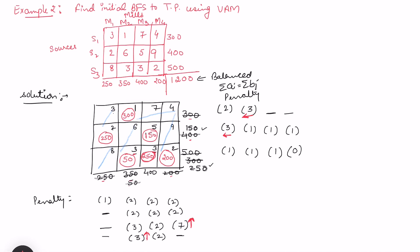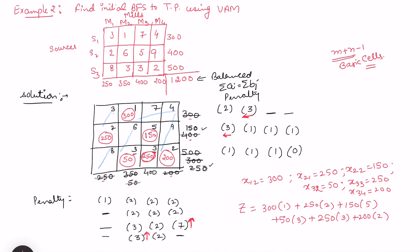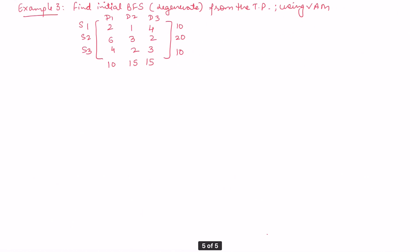This is the initial BFS. The count of basic cells should be m + n − 1. The basic variables are: x12 = 300, x21 = 250, x22 = 150, x32 = 50, x33 = 250, and x34 = 200. The corresponding objective value Z is calculated by multiplying each allocation with its cost — including 250 × 3 and 200 × 2 among the terms. That gives us Z at the initial BFS using Vogel's Approximation Method.